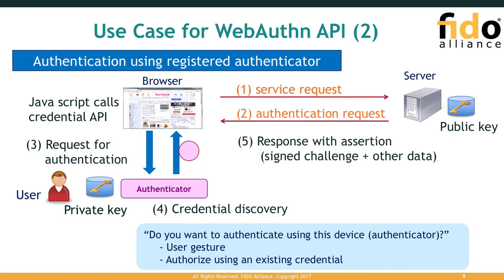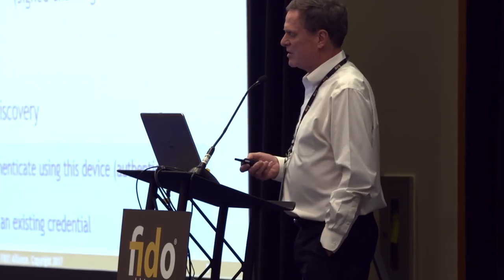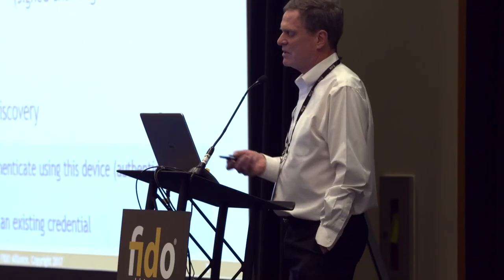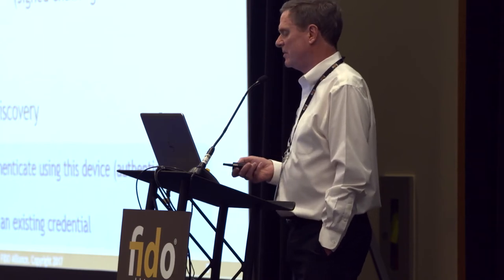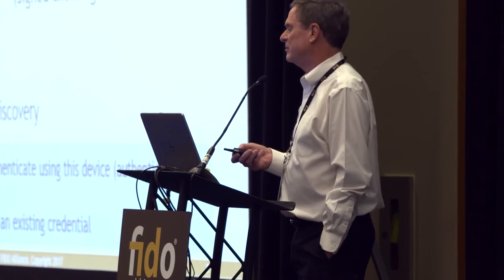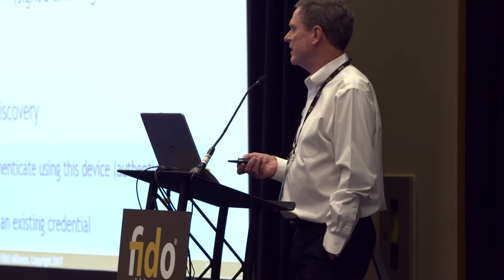Once we have a registered authenticator, we can go through the normal authentication request — the service request. It goes over to the server. The server says it knows who you are because it recognizes your public key, so it throws down the authentication request. It goes through the same JavaScript request to the authenticator, which winds up signing the particular blob of data that came from the server. The response goes back to the relying party along with the attestations of the particular device itself.